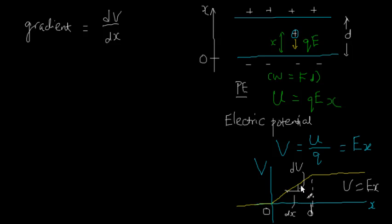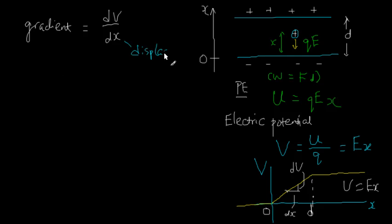What I'd like to do is think about what the physical meaning of this gradient is. We start by looking at the separate meanings of those two changes. The dx is just a small displacement. And if we recall the meaning of v, v is the electric potential. Potential is the potential energy per unit charge.